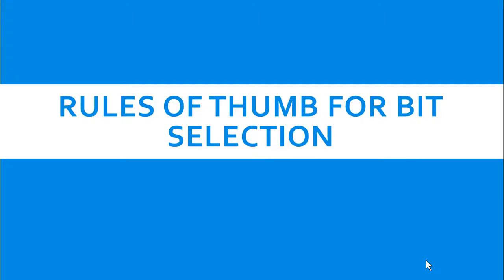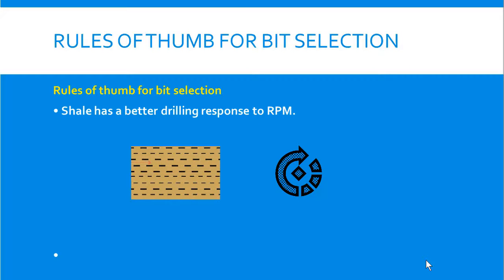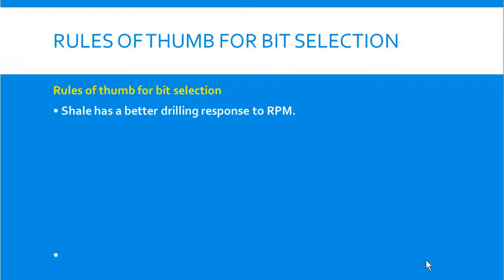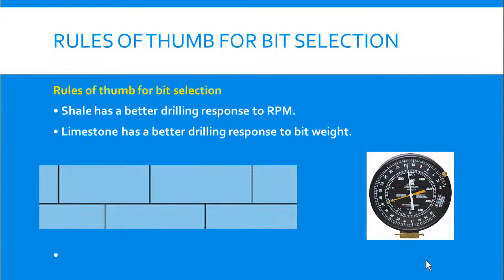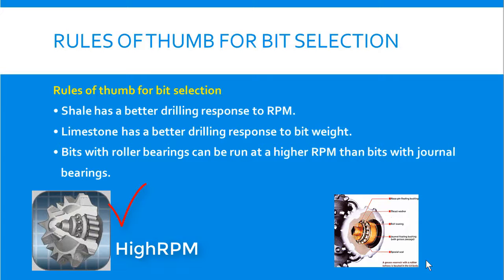There are a couple of rules of thumb that we can use for better bit selection. The first thumb rule is: shale formation has a better drilling response to RPM, whereas limestone has a better drilling response to weight on bit. Bits with roller bearings can be run at higher RPM than bits with journal bearings.